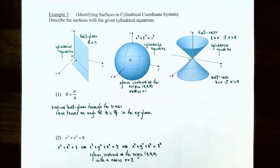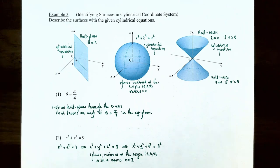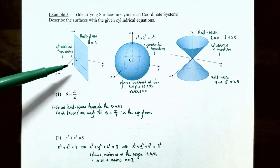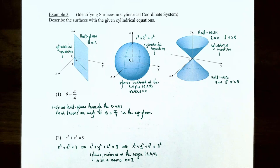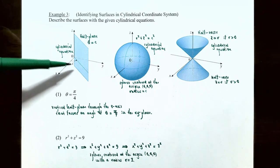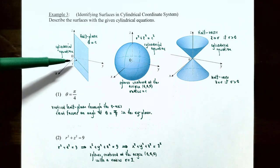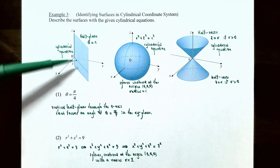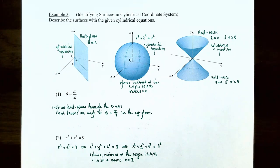In Example 3, we identify surfaces in the cylindrical coordinate system. Number one: theta equals π/4. There are no restrictions on r or z, so those can be any real number. This describes a half plane through the z-axis that forms an angle of π/4 in the xy-plane. In general, the cylindrical equation theta equals c is a half plane where the angle is c, with r and z being any real number.